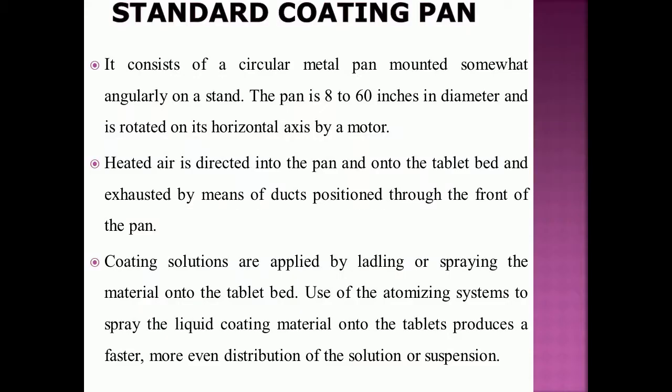The standard coating pan consists of a circular metal pan mounted somewhat angularly on a stand. The pan is 8 to 60 inches in diameter and is rotated on its horizontal axis by a motor. Heated air is directed into the pan and onto the tablet bed, exhausted by means of ducts positioned through the front of the pan. Coating solutions are applied by ladling or spraying onto the tablet bed; use of atomizing systems produces faster, more even distribution of the solution or suspension.